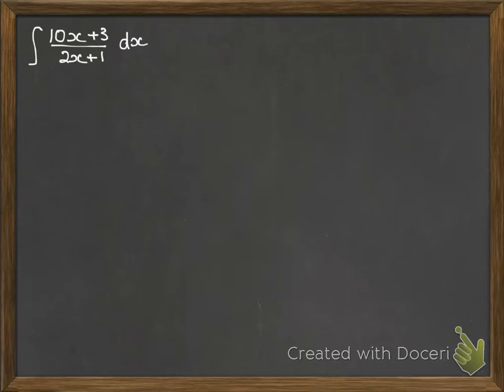So again, we want to separate out the fraction into pieces we can cope with. So first of all, if we imagine that we've got that 2x plus 1 on the bottom, and how could we write the top as a multiple of 2x plus 1?